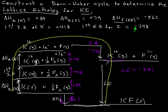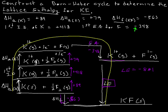All Born-Haber cycles are going to look the same. You start with the elements in their standard states and however many you need — if you need half of the diatomic, put a half in front. Then atomize the metal, ionize the atomized metal, atomize the non-metal, add the electron via electron affinity, use the lattice enthalpy to go all the way down, and the other pathway is the enthalpy of formation. You could solve for any unknown — lattice enthalpy, electron affinity, first ionization energy, or atomization.